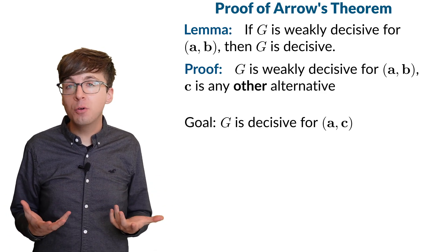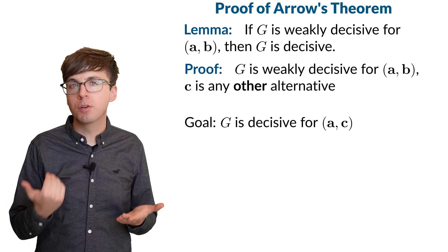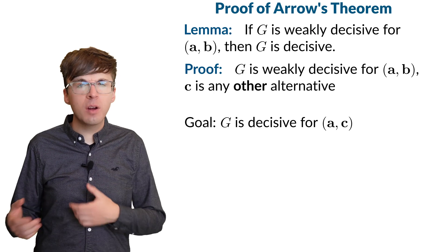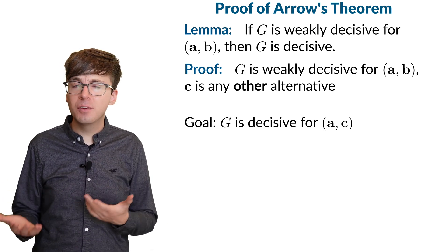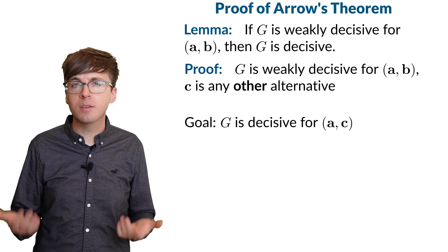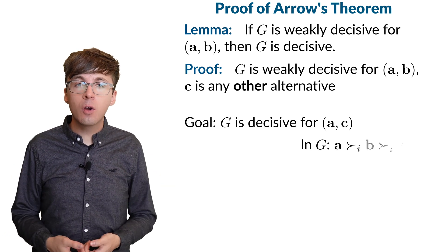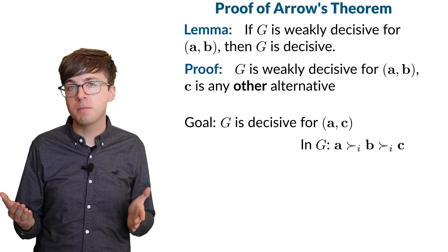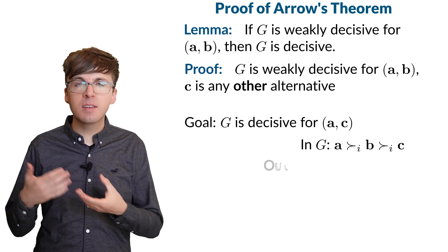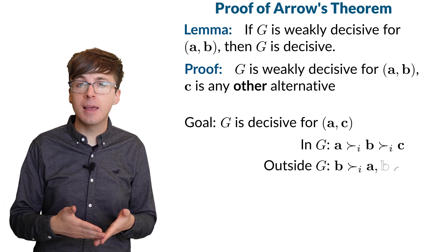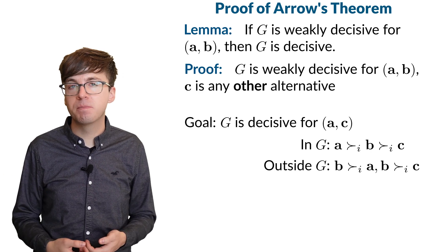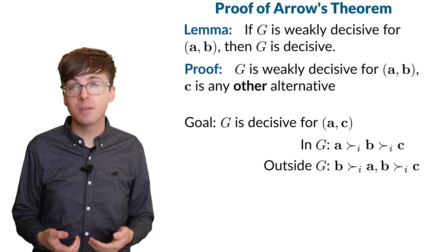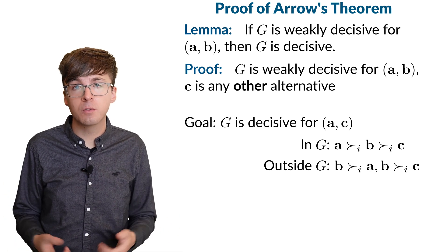Say everyone in the coalition votes for A over C. By the independence of irrelevant alternatives, the preferences for B have nothing to do with the comparison between A and C. So let's say in the coalition G, everybody's rankings go A, B, C. Outside of G, let's say B ranks higher than A and also higher than C. The position of B in the rankings is irrelevant for comparing A and C, so we're allowed to assume this case.